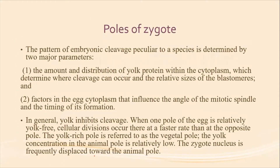The pattern of embryonic cleavage peculiar to a species is determined by two parameters. The two major parameters include: first, the amount and distribution of yolk protein within the cytoplasm, which determines where cleavage can occur and the relative size of the blastomeres; and second, factors in the cleavage cytoplasm that influence the angle of the mitotic spindle and the timing of its formation.